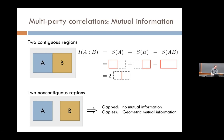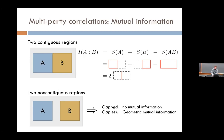Mutual information is not useful for detecting the integer quantum Hall effect — it gives either a completely non-universal number in the contiguous setup, or exponentially small corrections in the non-contiguous setup. A question was raised: for symmetry-breaking gapped phases, mutual information would be nonzero. That's right, and the measure I'm going to describe will give zero for a gapped phase even if it's a cat state with long-range order.